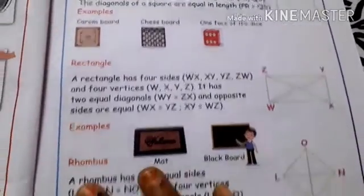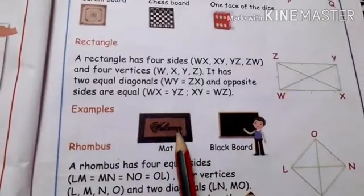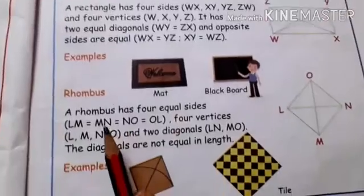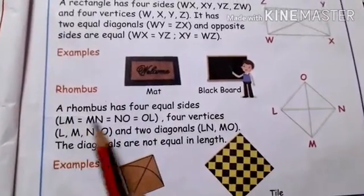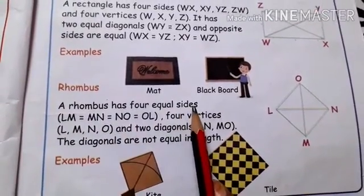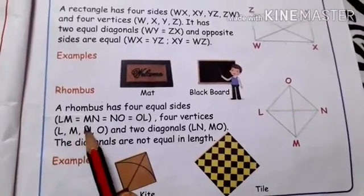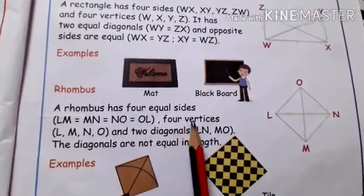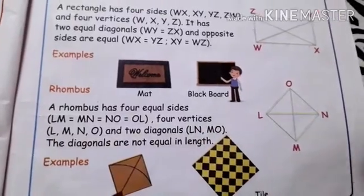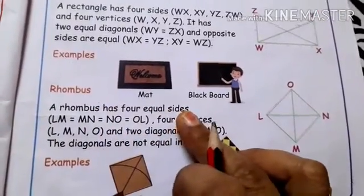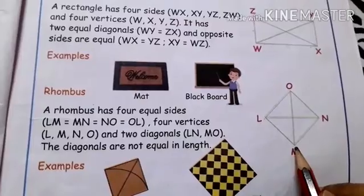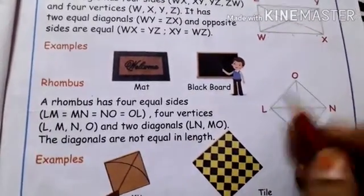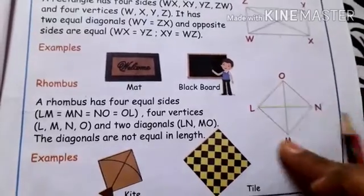An example of a rectangle is a mat or a blackboard. Rhombus: a rhombus has four equal sides — LM, MN, NO, and OL are all equal. LM equals MN equals NO equals OL.